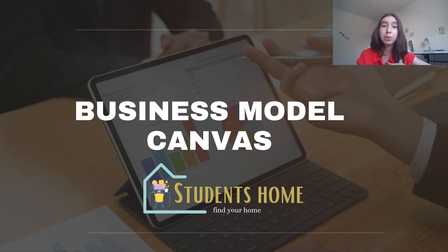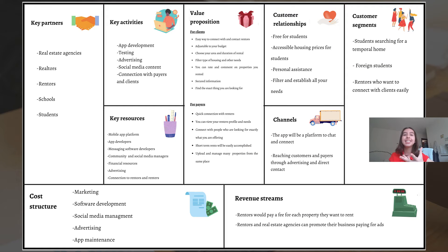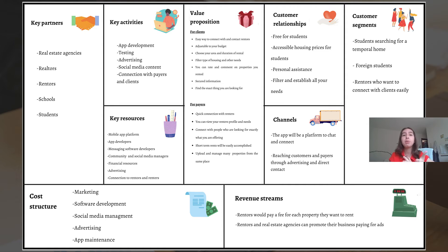Talking about our business model canvas, it looks like this. The main takeaways are that our value propositions for clients are an easy way to connect with and contact renters, the ability to adjust your budget, duration of stay, and other needs you may have. Clients will also have a profile through which they can rate and comment on properties rented using this app, that their information would be safe, and mainly that they will find the exact thing they're looking for.